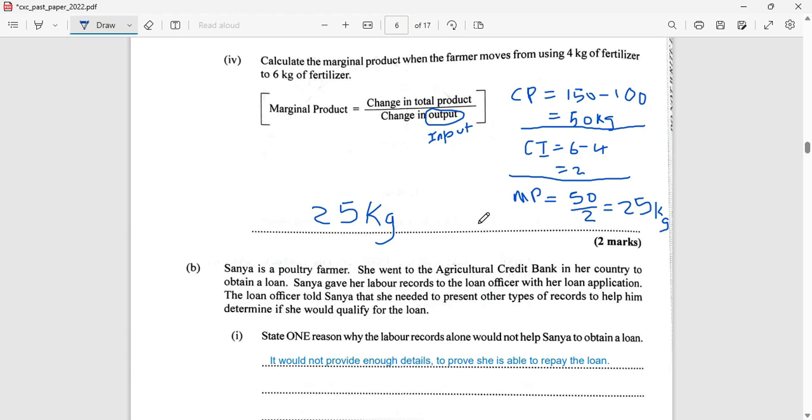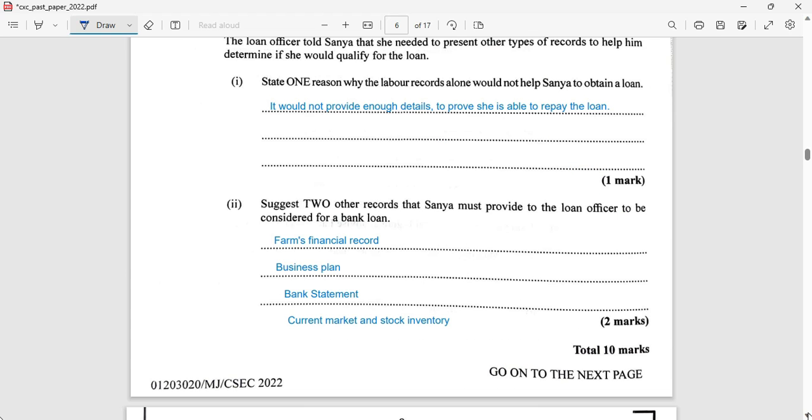My explanation here: it would not provide enough details or enough evidence to prove she's able to repay the loan. Suggest two other records that Sanya must provide to the loan officer to be considered for a bank loan. The financial records are going to be needed, the income and expenditure, a business plan must be supplied for an agricultural loan, a bank statement will be needed to look at your asset versus your liability at the institution that you invest with, and your current market and stock inventory.